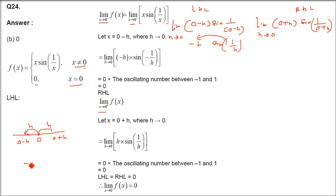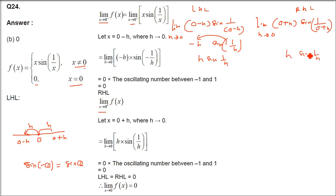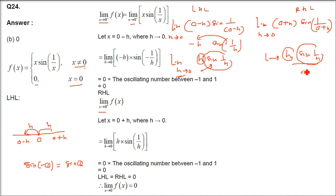Now sin(−θ) = −sin(θ). So minus h·sin(−1/h) = minus h·(−sin(1/h)) = h·sin(1/h). Similarly for RHL, it is h·sin(1/h). Since the limit is h tending to 0, h is 0, so 0 times anything is 0. Therefore limit as x tends to 0 of f(x) equals 0.